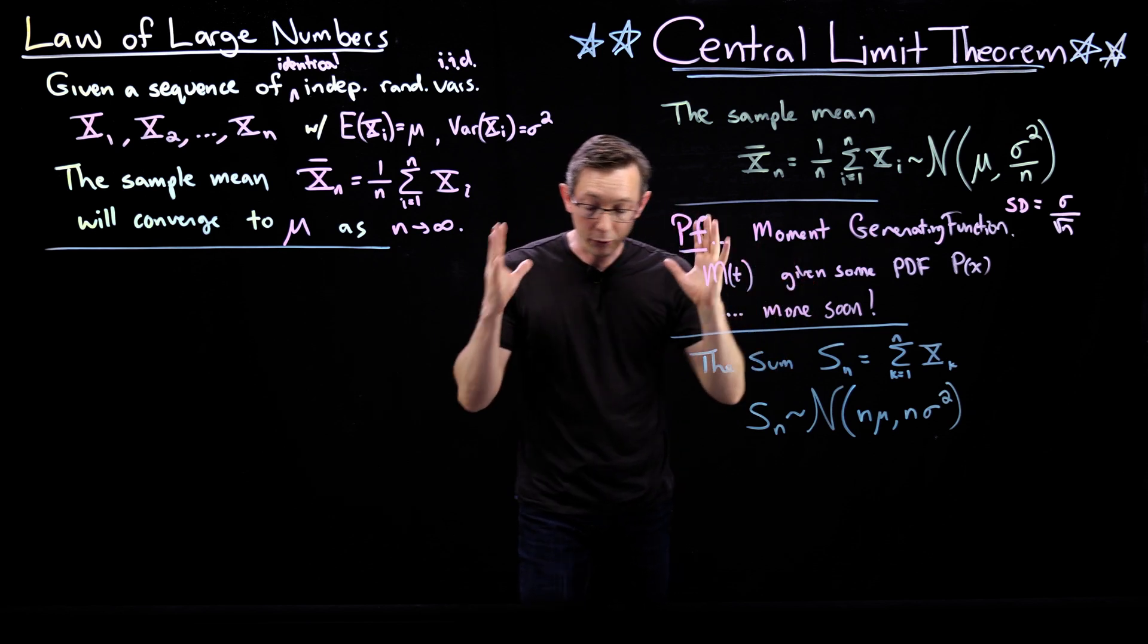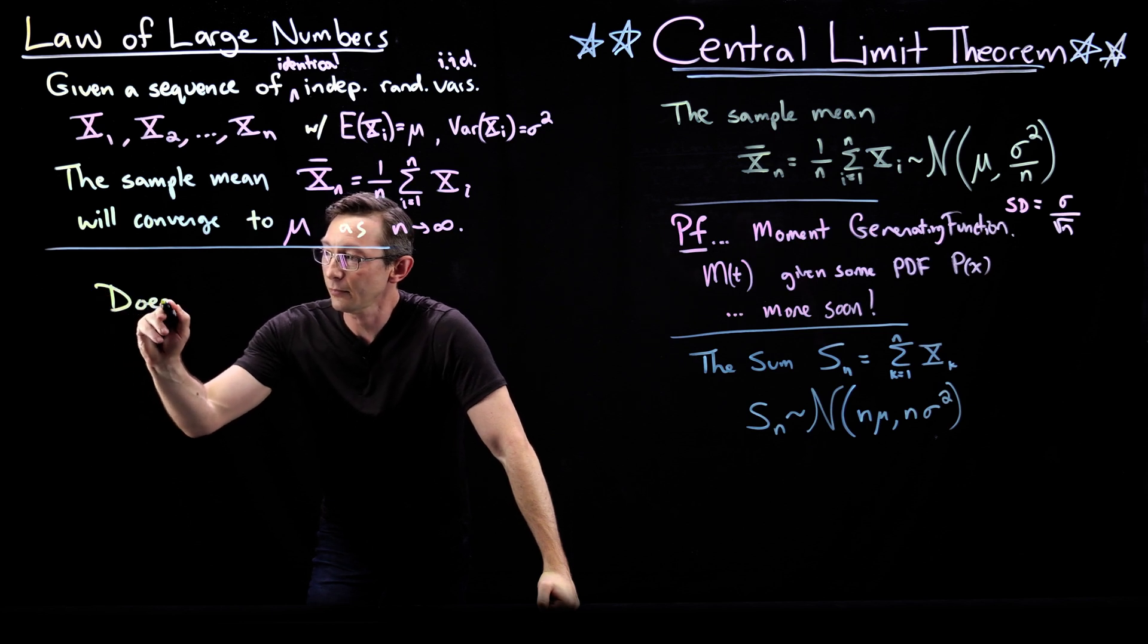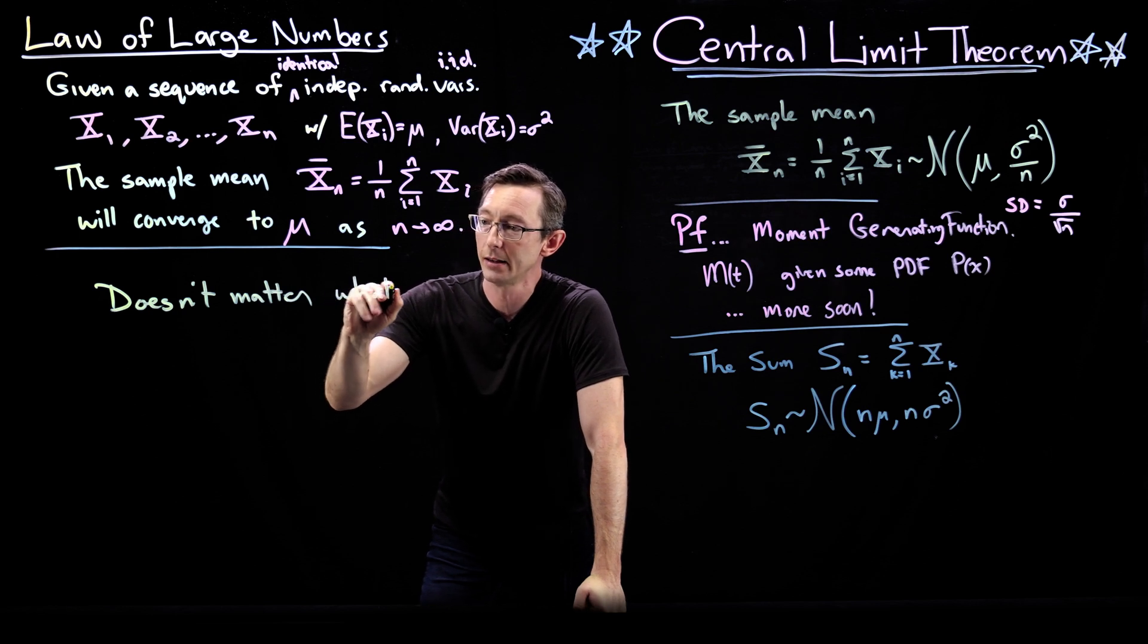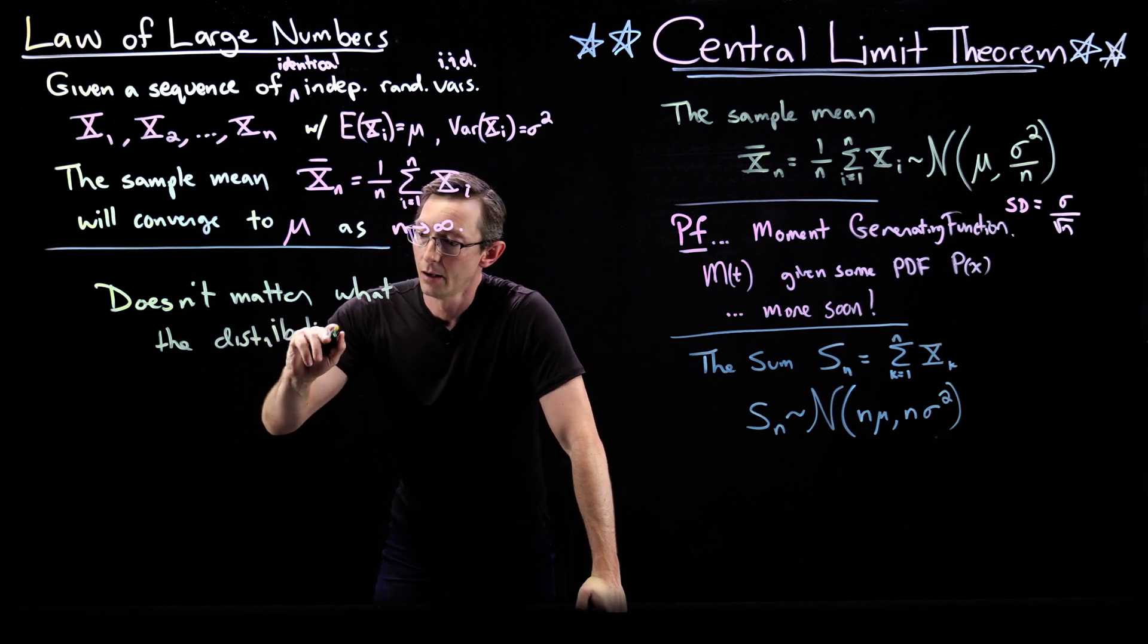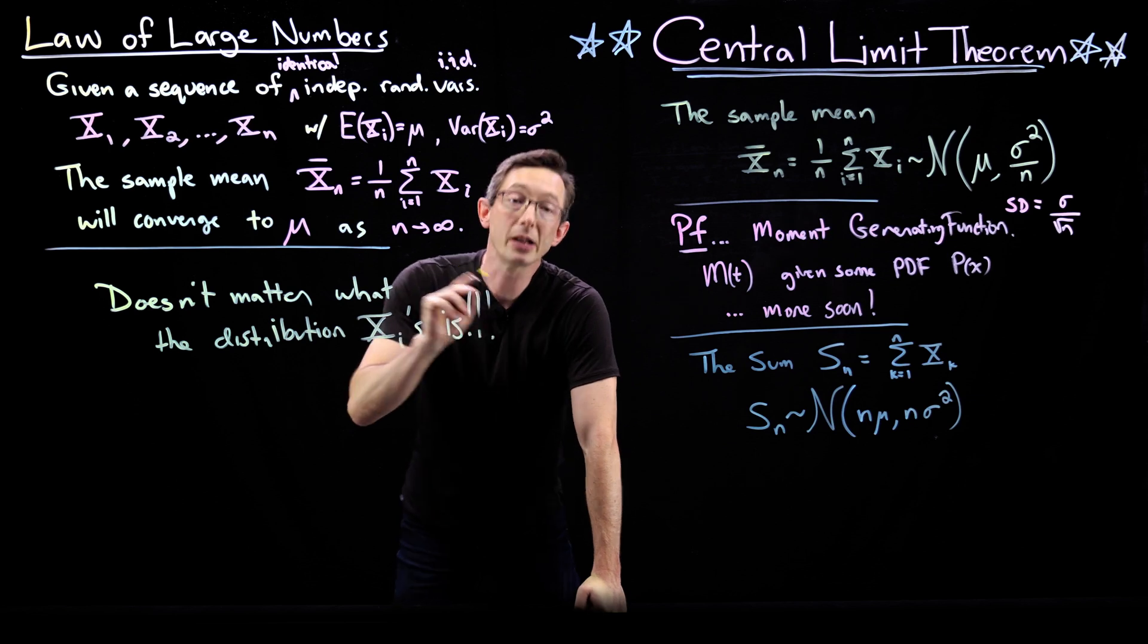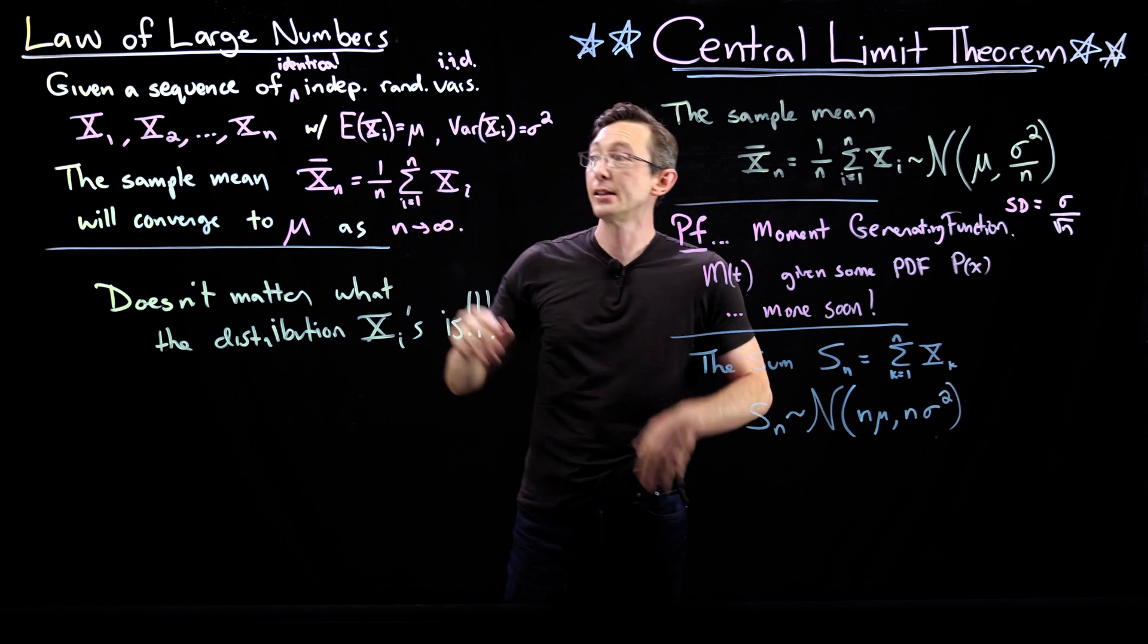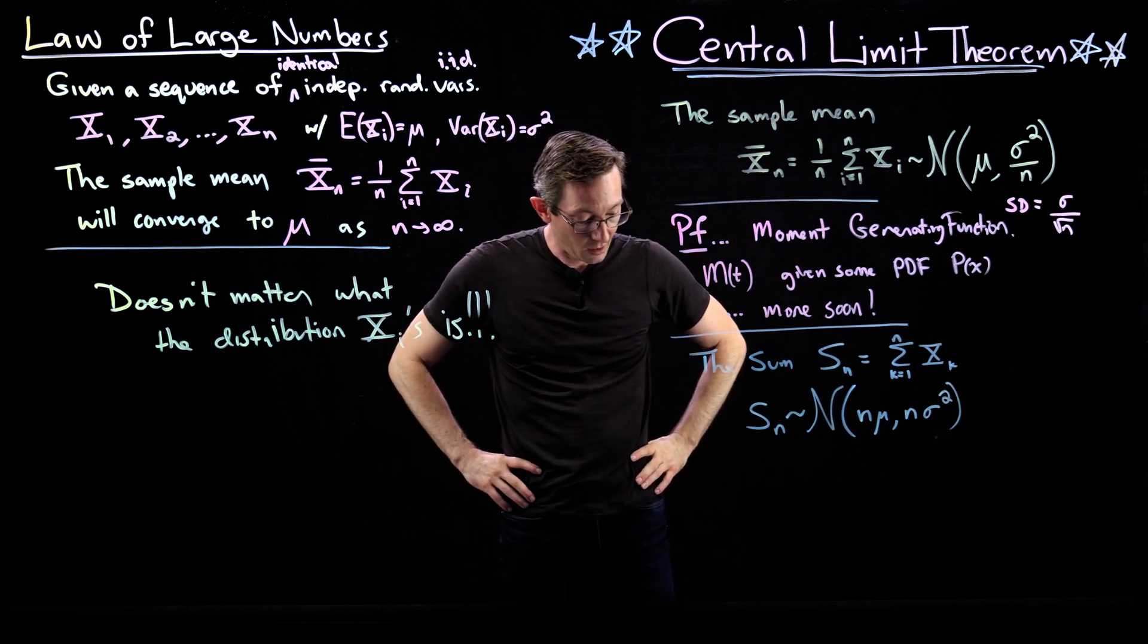Now, again, the really profound thing, and I'm going to say this again, because it's so profound, this doesn't matter. It doesn't matter what the distribution of X is. It doesn't matter what the distribution of my X i's is. And that's a pretty wild fact. So it doesn't matter how these are distributed, as long as they're identical and independent with a mean and a variance, you can make this very, very powerful statement of the central limit theorem.